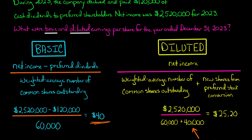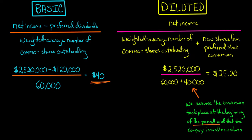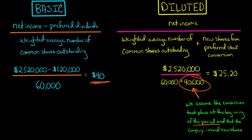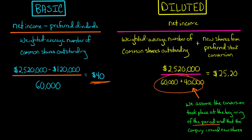We're assuming that as of the beginning of the period — January 1st — those preferred shareholders had converted their shares to common shares. They didn't actually do that, but hypothetically, had they converted at the beginning of the period, the company would not have paid any preferred dividends. So we take $2,520,000 and divide by the number of common shares outstanding plus an additional 40,000 shares from conversion — because the preferred shareholders' 40,000 shares each convert one-to-one to a common share, and we assume the company issued new common shares to satisfy that conversion. Our denominator is now 100,000, and $2,520,000 divided by 100,000 gives us a diluted earnings per share of $25.20.